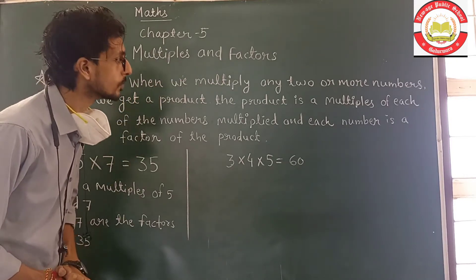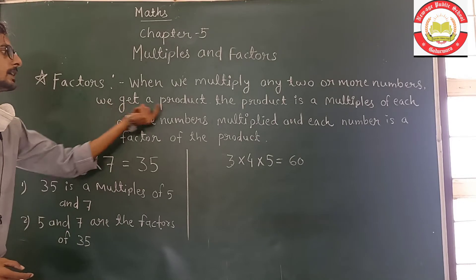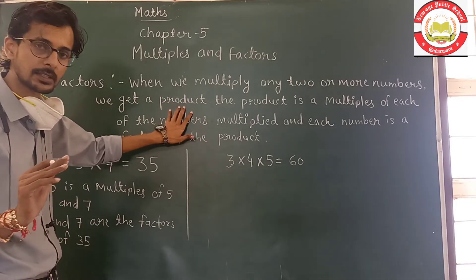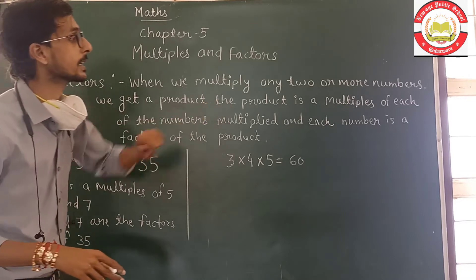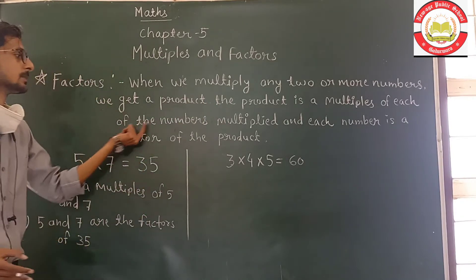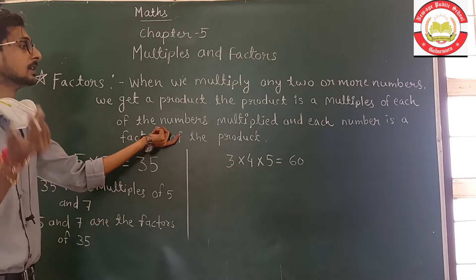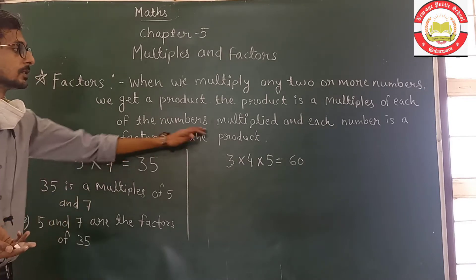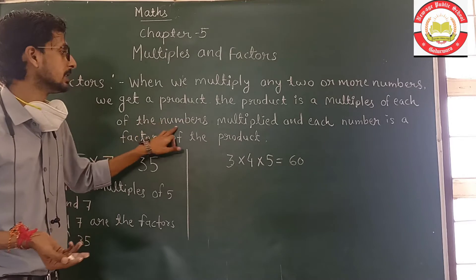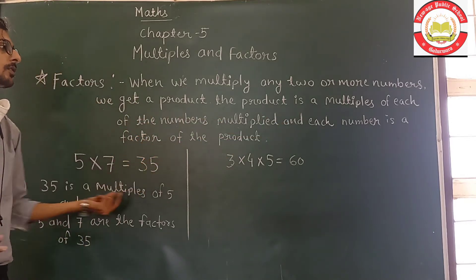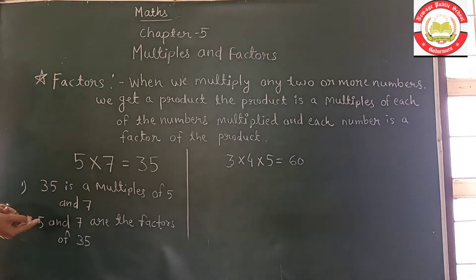When we multiply any two or more numbers, we get a product. The product is a multiple of each of the numbers. Each number is a factor of the product.